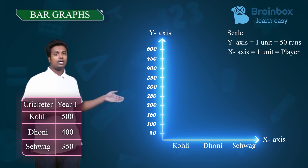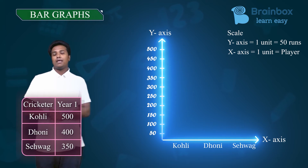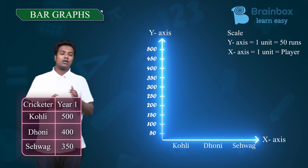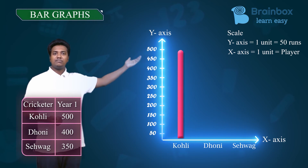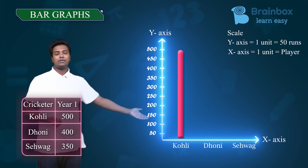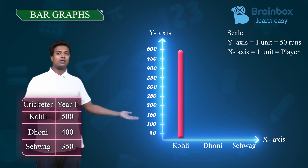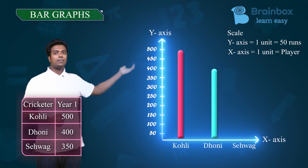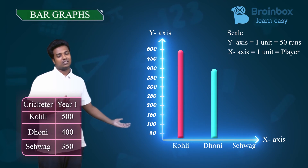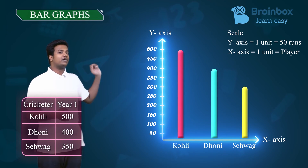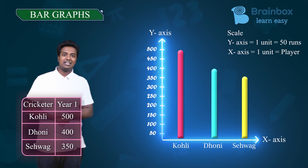Here is Kohli, here is Dhoni, and here is Sehwag. Kohli has scored 500 runs, so a bar will be raised till 500 runs in Kohli's place. For Dhoni, he has scored 400 runs, so a rectangle bar will be raised up to 400 runs. And Sehwag has scored 350 runs, so the bar will be raised till 350 runs.